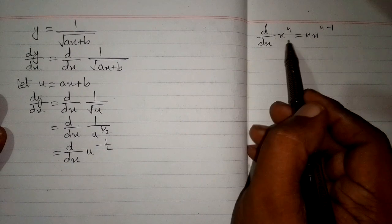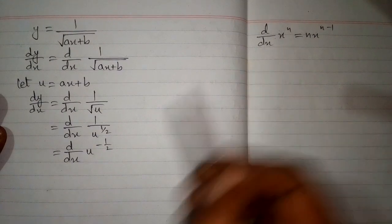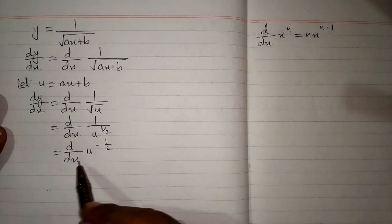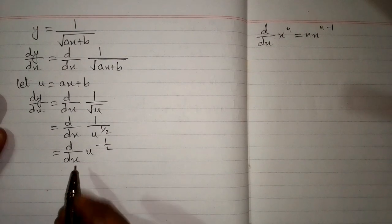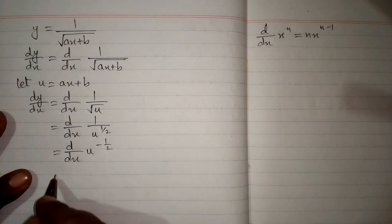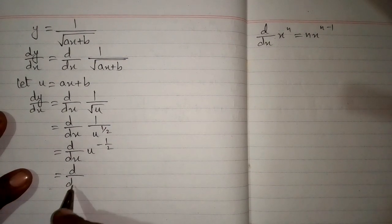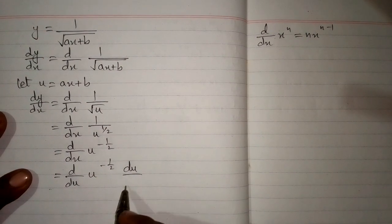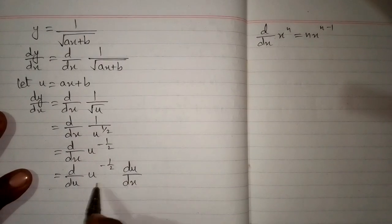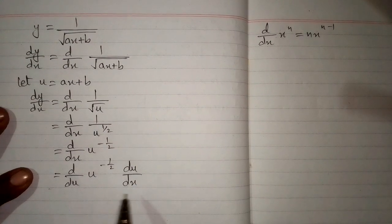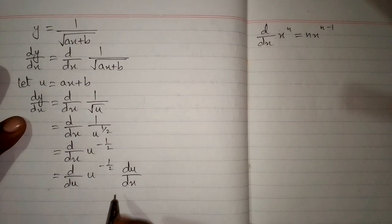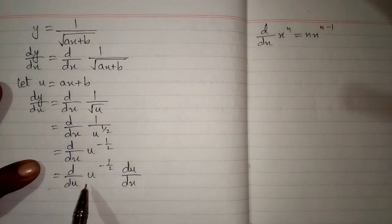But we cannot apply the power rule of differentiation over here because these two variables are not the same. So, we must have du in place of dx. First we will write d by du and then multiply it by du by dx in order to balance this. And this is called the chain rule of differentiation. Now, we can apply this formula because these two variables are same.